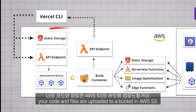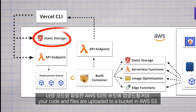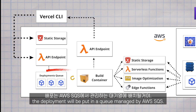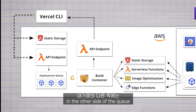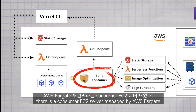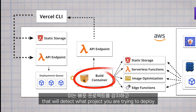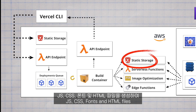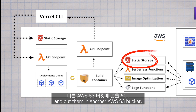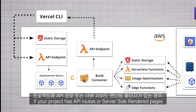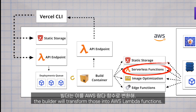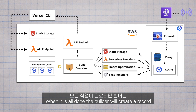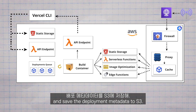To recap the deployment side: when you deploy to Vercel, your code and files are uploaded to a bucket in AWS S3. An API endpoint checks the deployment and verifies you are authorized. If all checks pass, the deployment is put in a queue managed by AWS SQS. On the other side of the queue, a consumer EC2 server managed by AWS Fargate detects what project you are deploying and installs a builder script. The builder generates all static assets — JavaScript, CSS, fonts, and HTML files — and puts them in another AWS S3 bucket. If your project has API routes or server-side rendered pages, the builder transforms those into AWS Lambda functions, optimizes images, and creates middleware functions that are deployed outside of AWS. When done, the builder creates a record in a deployments database and saves the deployment metadata to S3.